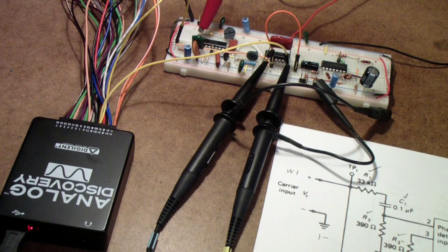I have the analog discovery hooked up. I'm using it only to provide the carrier signal and the intelligence signal for the experiment. For reasons I'll go into later, I am NOT using the analog discovery oscilloscope functions in this particular experiment.